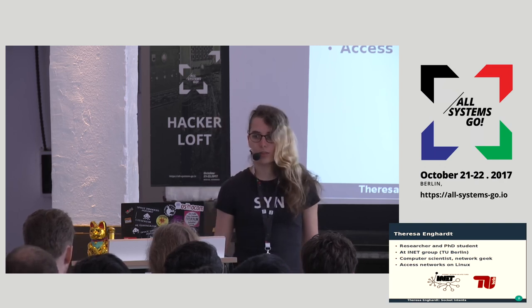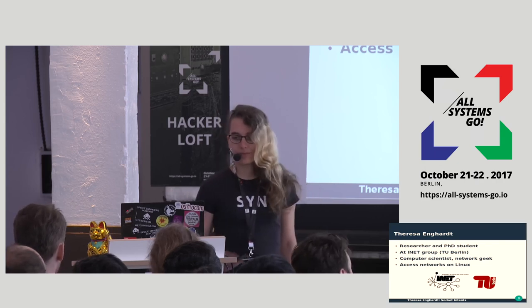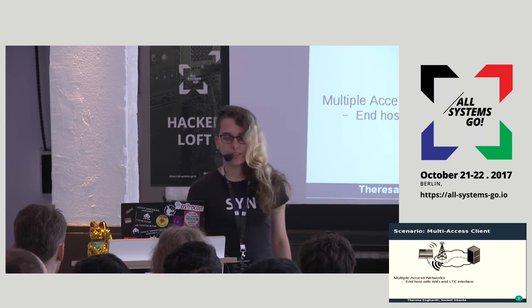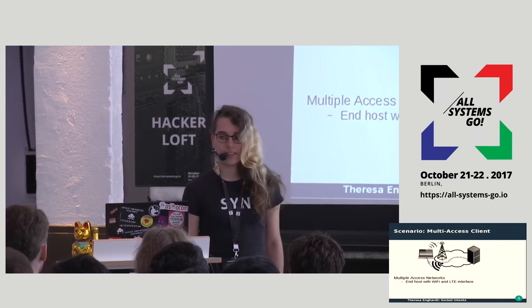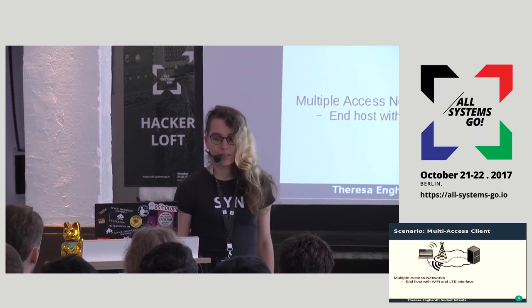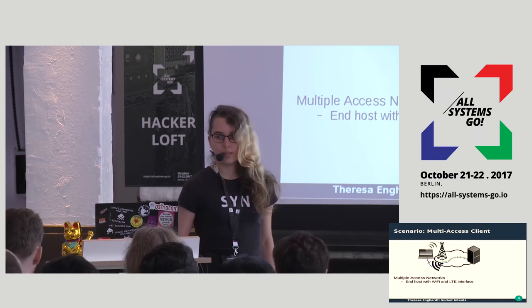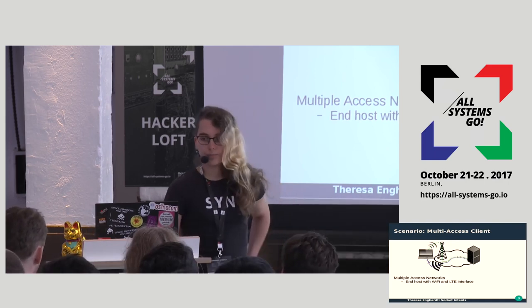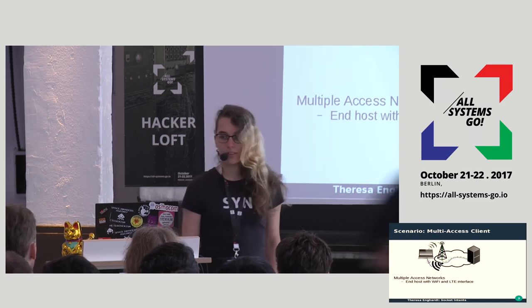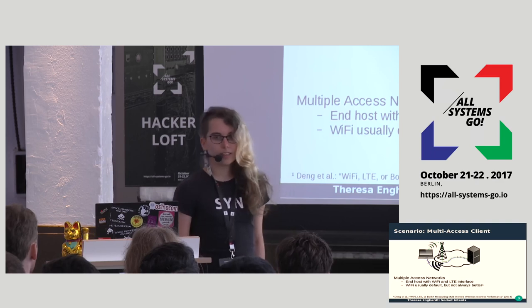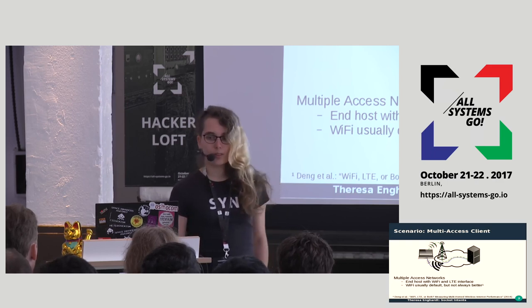We have been developing the prototype for about four to five years, so it's all research code. The scenario I want to talk about is a multi-access client: an end device like a notebook running Linux with multiple network interfaces connected to different access networks — for example, one LTE and one Wi-Fi. Usually Wi-Fi is preferred over LTE by default, but it's not always better in terms of performance.